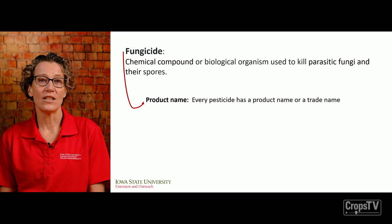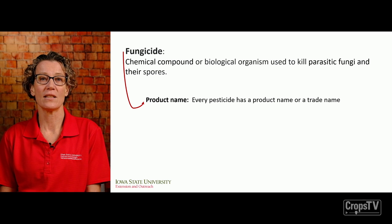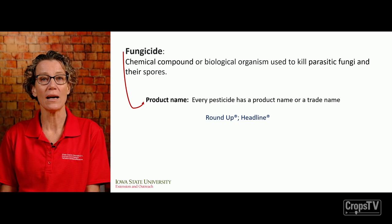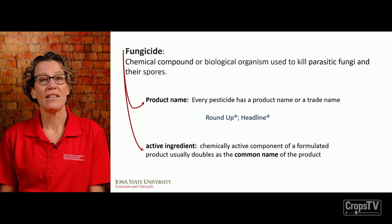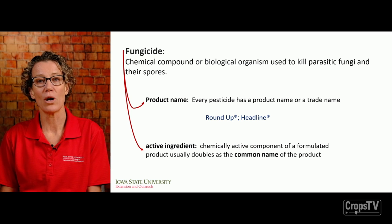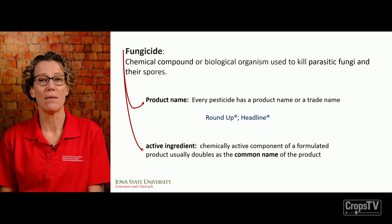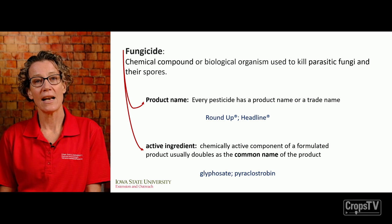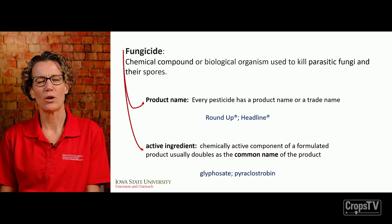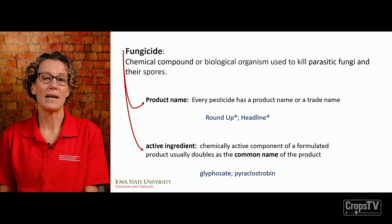A fungicide normally has a product name, just like every pesticide has a trade name. For example, Roundup would be the trade name of a herbicide; Headline would be the trade name of a fungicide. Each product contains an active ingredient — the chemically active component of that formulated product. For Roundup, the active ingredient is glyphosate. For Headline, the active ingredient is pyraclostrobin, which is also the common name.